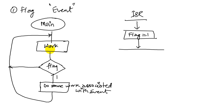One important thing: when we have in fact done the work associated with the event, we must disable the flag — set it to zero. This way, when we come back to check the flag again, we are not finding it on simply because we did not turn it off.